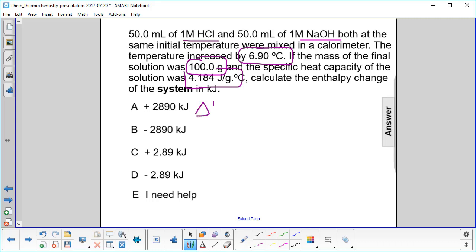We've been working with the enthalpy change of the surroundings is MC delta T. But we want the system. That's pretty simple. All we do is find the surroundings and then multiply that by negative 1.